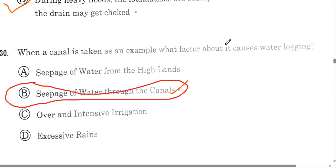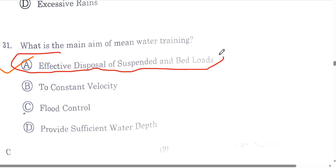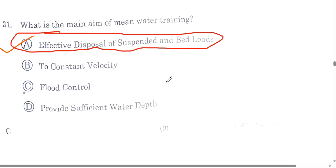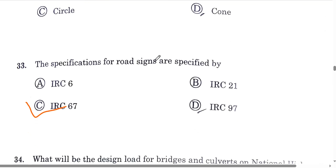Question number 31: what is the main aim of river water training? The answer is effective disposal of suspended and bed loads. Option A is the correct answer. Question number 30: in what shape is the compressive stress distributed in a flexible pavement? It is a truncated cone. Option A is the correct answer.